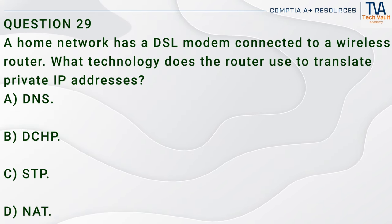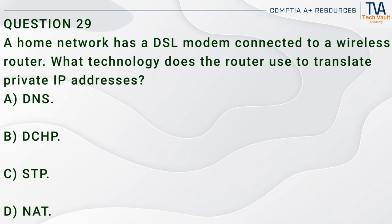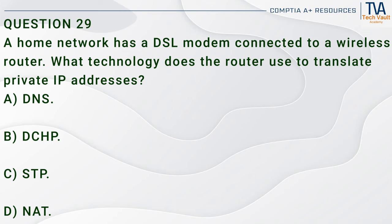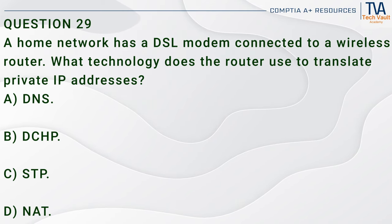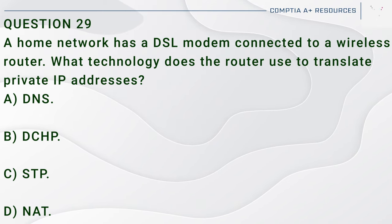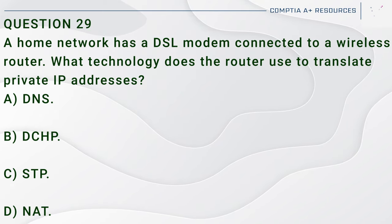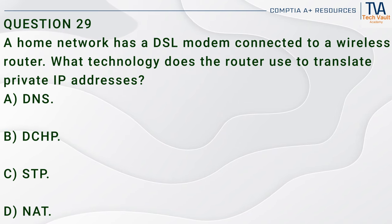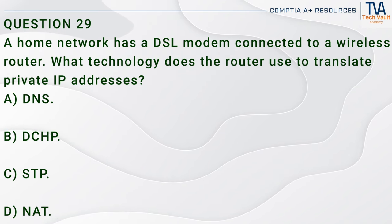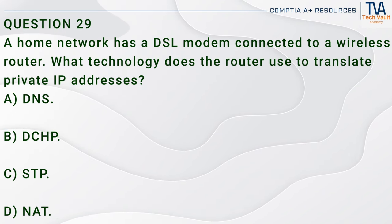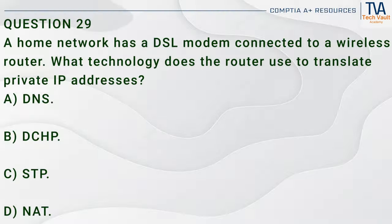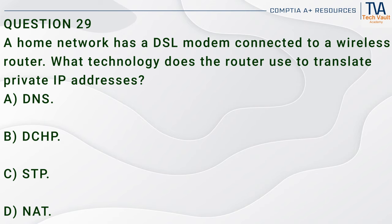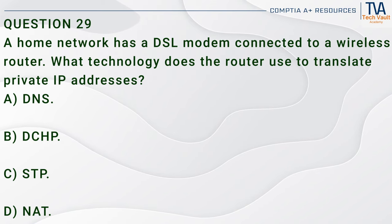Question 29. A home network has a DSL modem connected to a wireless router. What technology does the router use to translate private IP addresses? A. DNS. B. DHCP. C. STP. D. NAT.